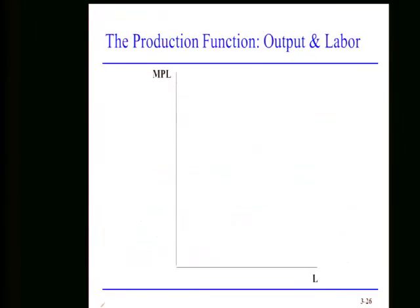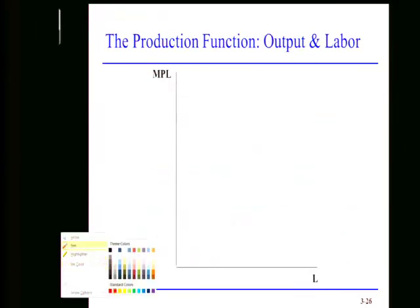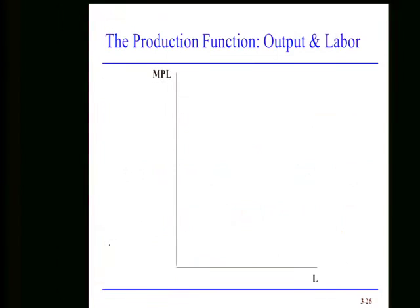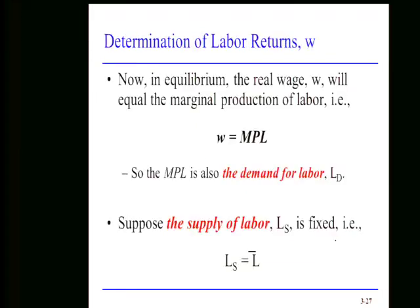Because the slope of the production function flattens out, the marginal product of labor also falls. Nothing new here from what we saw with capital — exactly the same intuition.